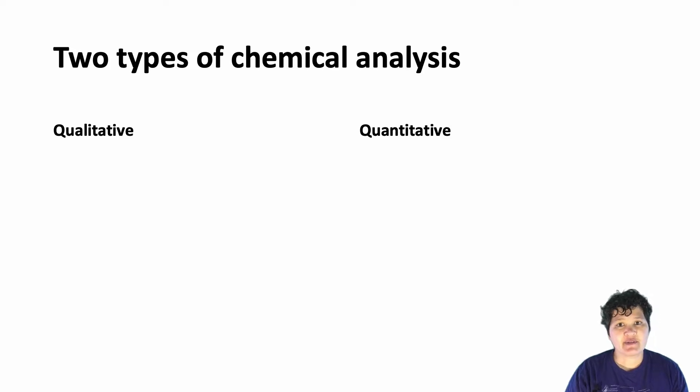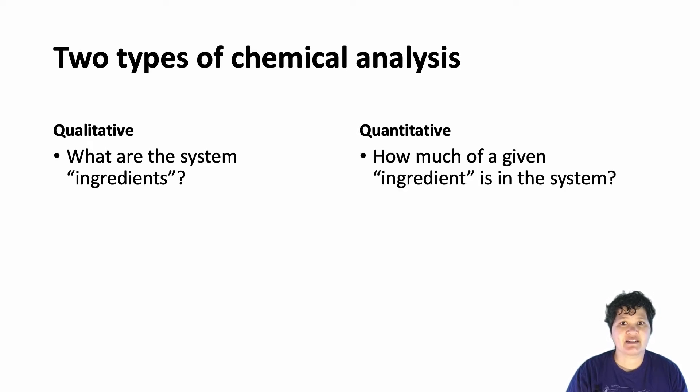In general, there are two types of chemical analysis, qualitative and quantitative. Returning to the food analogy that I used in the previous video, you might consider that qualitative analysis is like figuring out what the ingredients are in a particular recipe, while quantitative analysis is determining how much of each ingredient you need to use. Qualitative analysis can give you an analysis of what elements are present, or it can tell you what molecules those elements are combined into, or both.